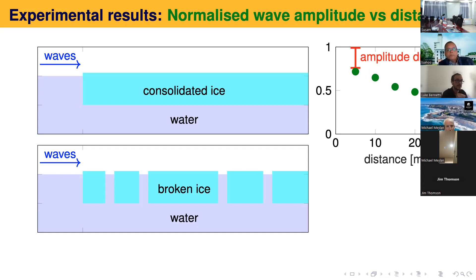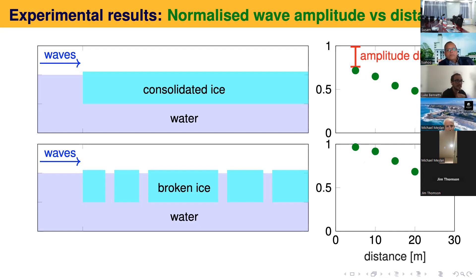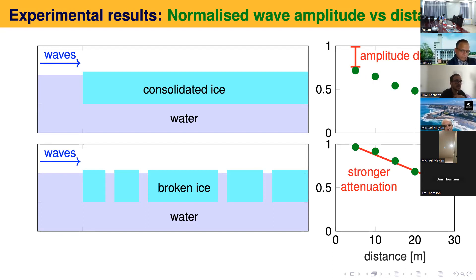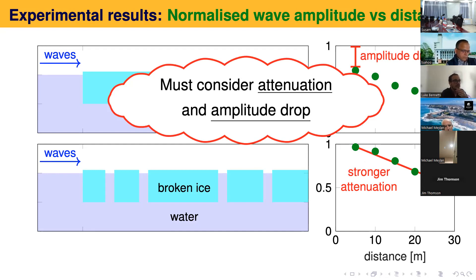Here's what we got from the first test where the ice stayed consolidated. These are wave heights normalized against the incident wave heights. You can see a gradual reduction in wave height through the ice cover — that's wave attenuation as waves propagate through the ice. The key thing I want to point out is this big drop at the first measurement point in the ice cover, which I'll refer to as an amplitude drop. In the later test when the ice is broken up, that amplitude drop disappears, while the attenuation is actually stronger.